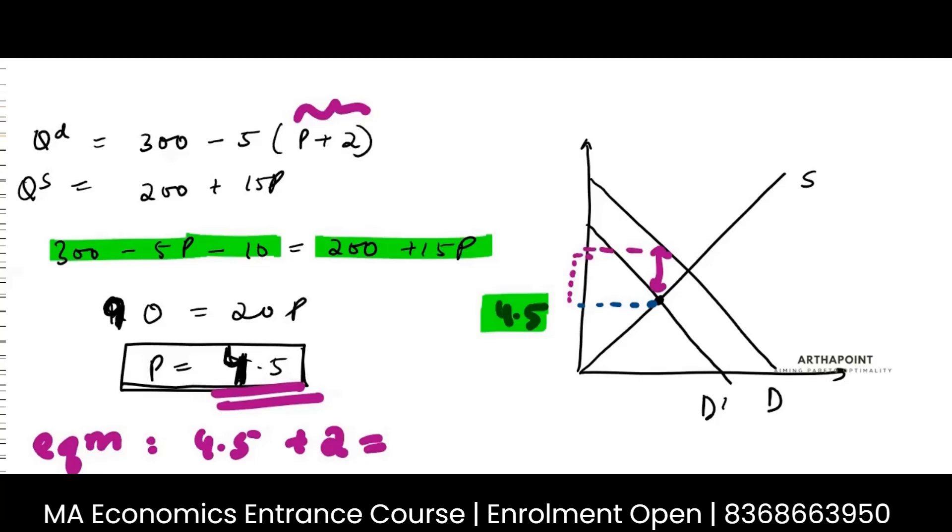So always equilibrium in market will be 4.5 plus tax. So you go back and whatever this gap is between the two demand curves, this is 2. And if you add this back, you get 6.5.